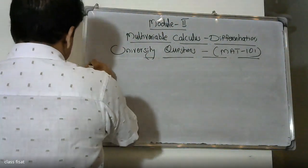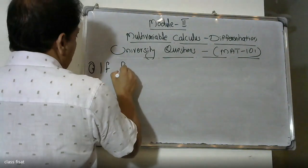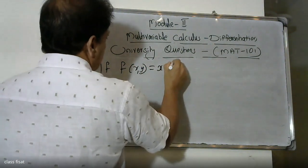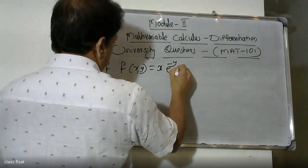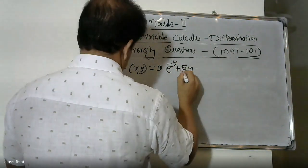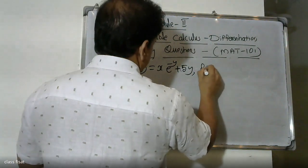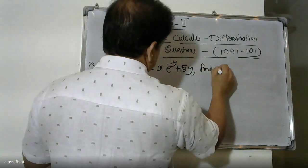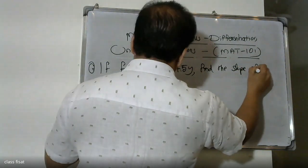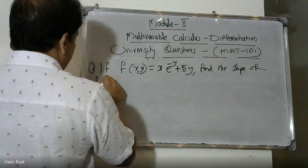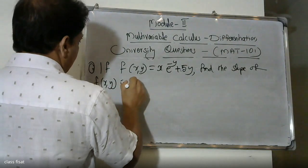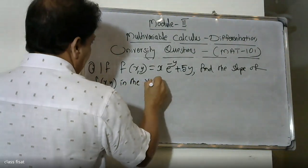Number two: if f(x, y) is equal to x times e raised to minus y plus 5y, find the slope of f(x, y) in the x-direction.